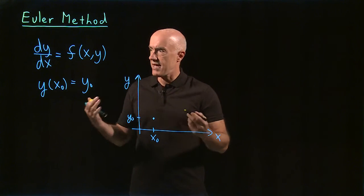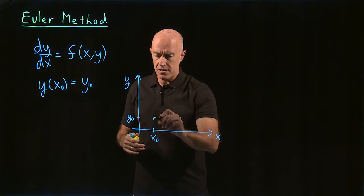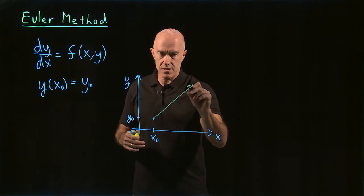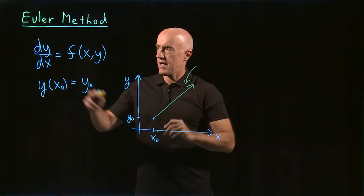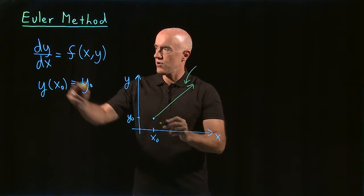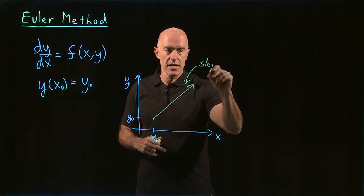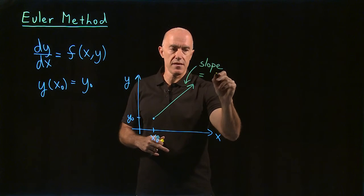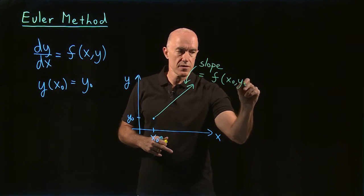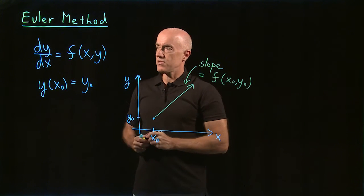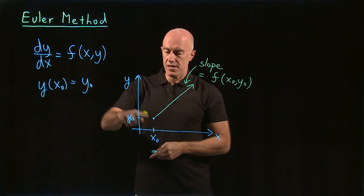So let me draw the slope. So here is the slope. Let's say dy/dx is positive, so it's increasing. So let me draw it like this. So this is our slope of the solution curve, dy/dx. So that's the slope of that line, which is going to be f of x naught, y naught. That's what the differential equation gives us.